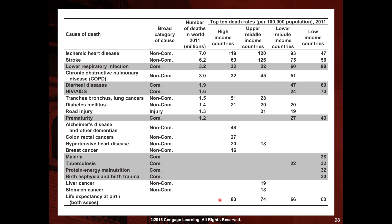Life expectancy at birth for both sexes is shown alongside these groups. For high-income countries, life expectancy for men and women together is 80 years, declining for lower-income country groups. Within each group, the top 10 death rates are shown and other cells are left empty if they are not in that group's top 10.